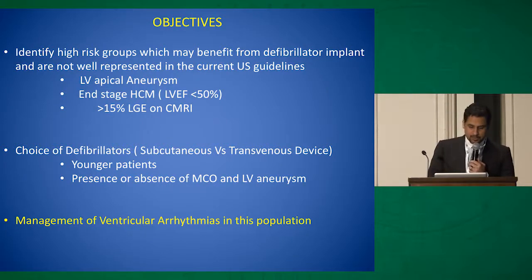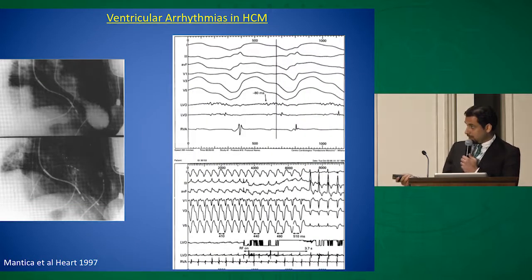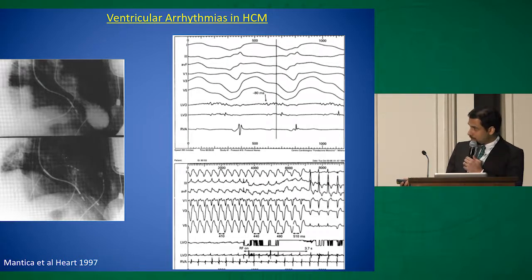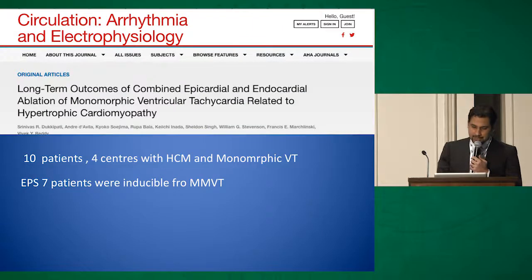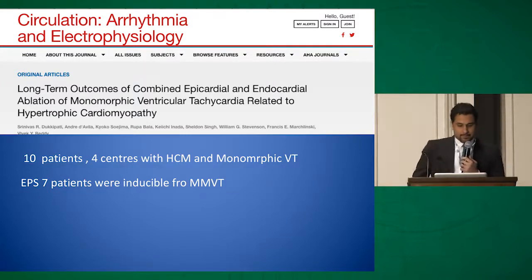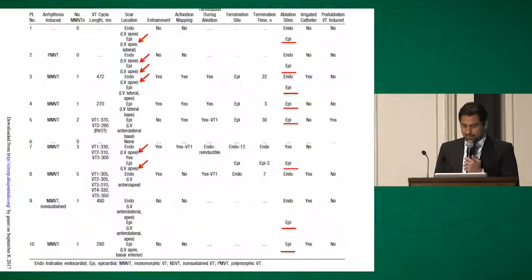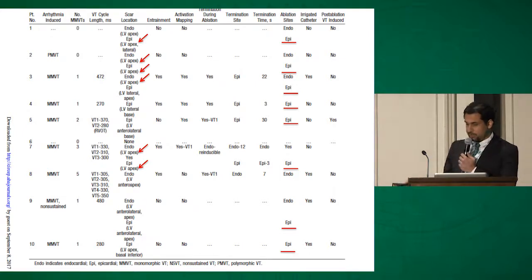Coming to management of ventricular arrhythmias in this challenging population: the first case report was in 1997 — a patient with LV apical aneurysm with a beautiful LV gram. They had monomorphic reentrant VT with a good mid-diastolic potential. Ablation at this site was successful, but in this patient the VT recurred the next day and eventually the patient had to undergo aneurysm surgery, which is a good option for some patients. A case series from Vivek Reddy's group had 10 patients from four centers; seven had inducible VT. Most patients had either LV apical involvement — the most common location of scar — or anterolateral location. Epicardial approach was required in most of these patients.